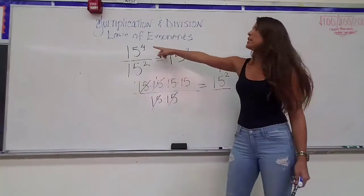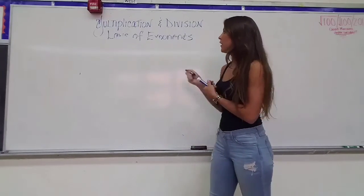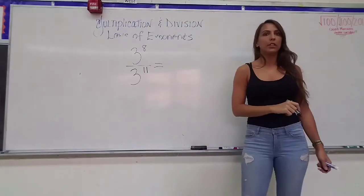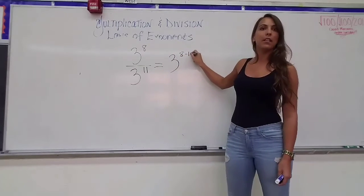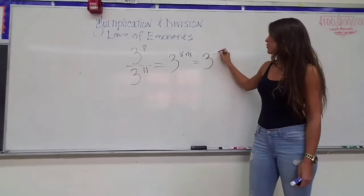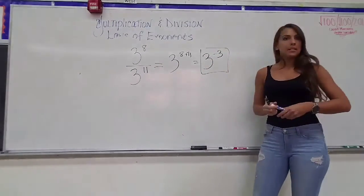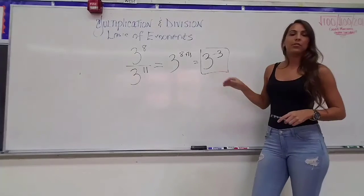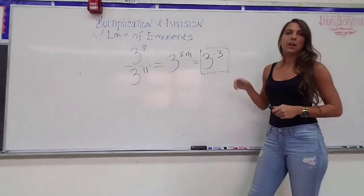Let's do one more example with the division law. If I have 3 to the 8th power divided by 3 to the 11th power, following the law: keep the base of 3 and subtract the exponents, 8 minus 11. Since 8 minus 11 equals negative 3, the answer is 3 to the negative 3rd power. However, it's not fully simplified, because normally we want expressions with only positive exponents. How to simplify negative exponents will be covered in another video, so 3 to the negative 3rd is correct but not completely simplified yet.